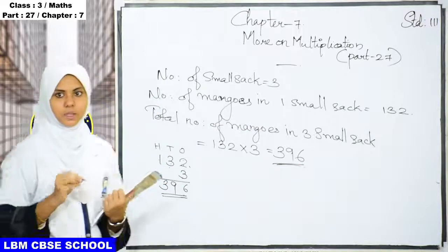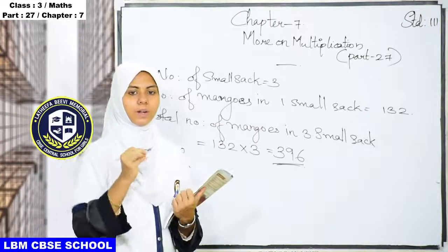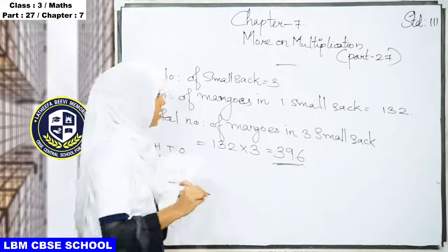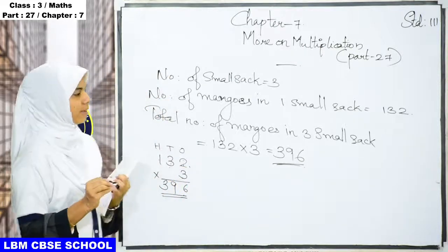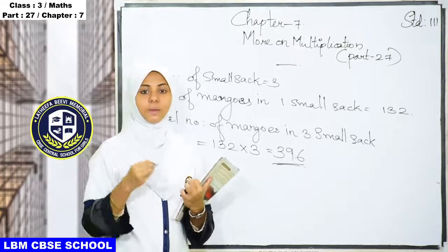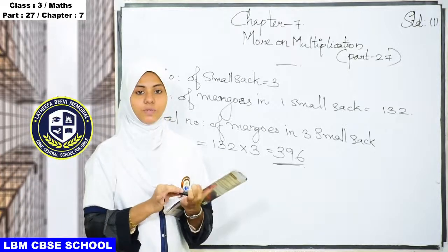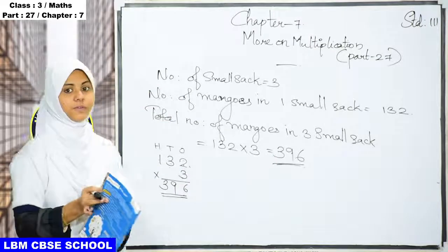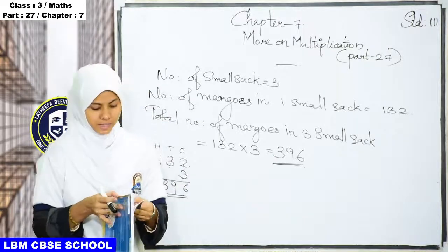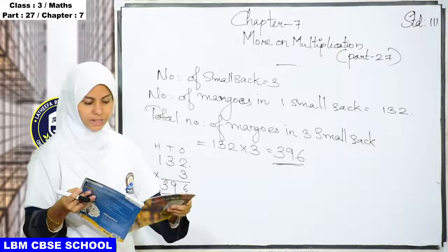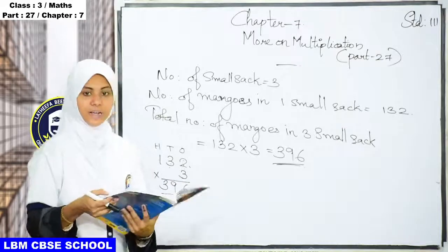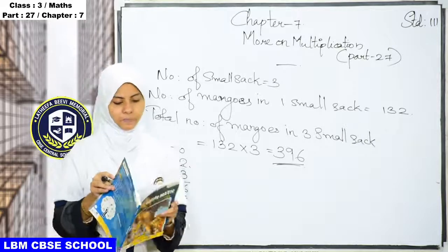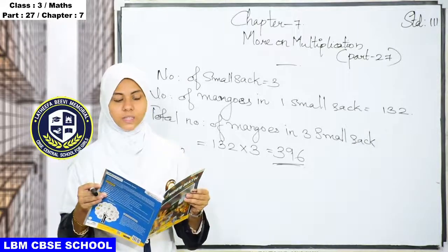Now we have to find the total number of mangoes in five big sacks, similar to how we found it for the three small sacks. This is mentioned on the next page — page number 4. Please take out page number 4. Let us calculate the total number of mangoes in the big sacks.